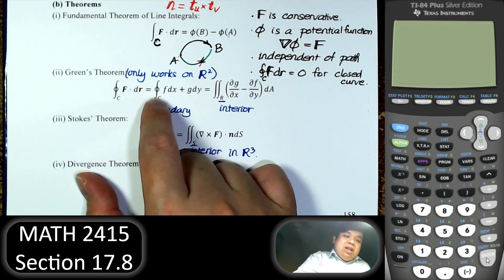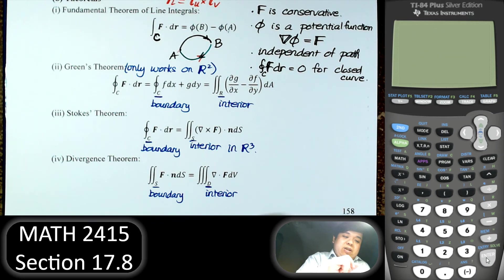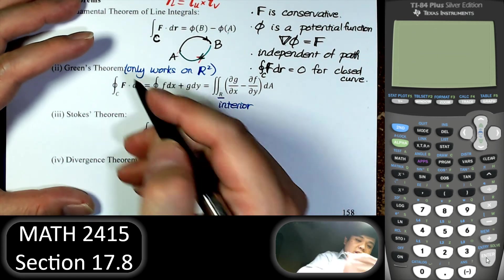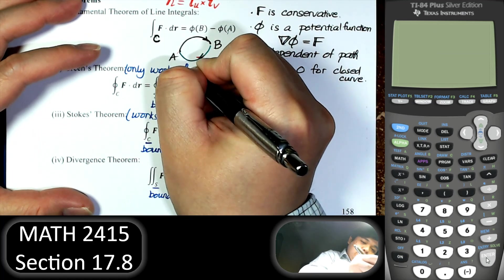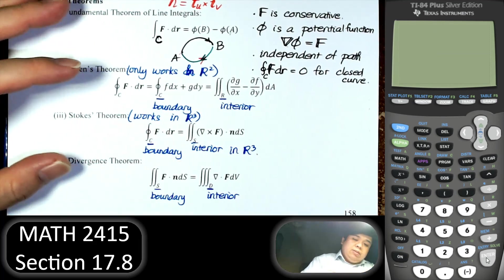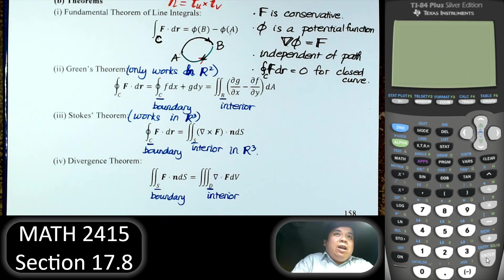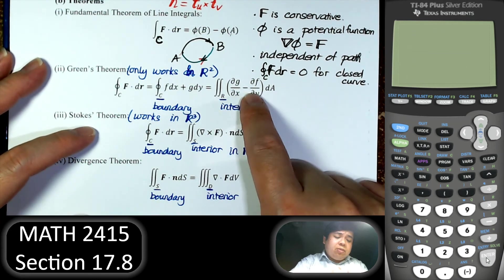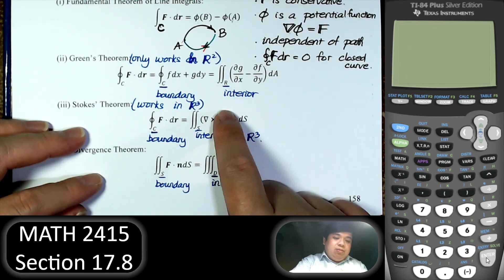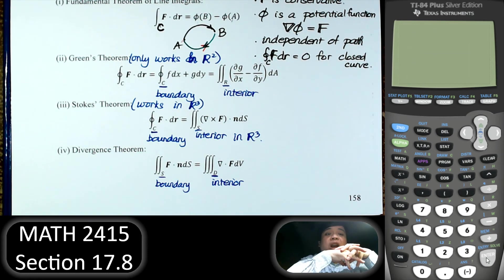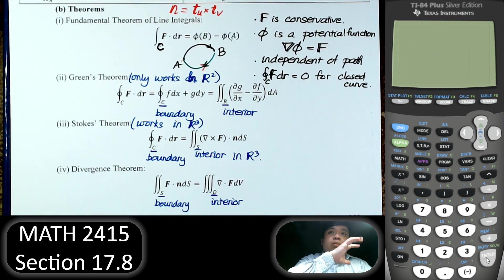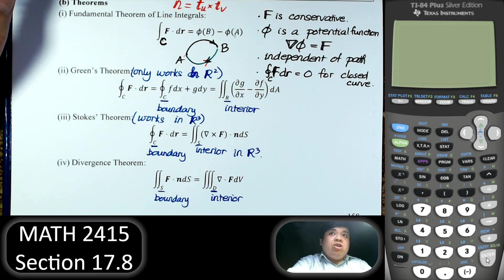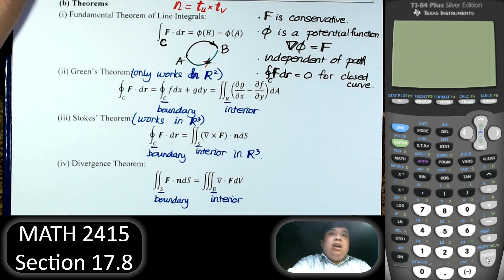When we use these theorems — Green's, Stokes', and Divergence — the calculation is a lot easier. Green's Theorem converts the line integral on the boundary to the interior double integral; Stokes' Theorem works in 3D R³. All three theorems allow us to move from one integral to the other. That's pretty much all I want to cover for Calculus 3. Thank you for watching.